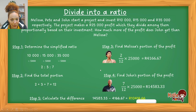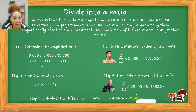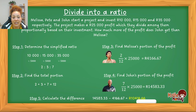Key points for dividing into a ratio: first find the simplified ratio, then find the total portion, then calculate only the portions the question asks for. If the question had asked how much each person gets, you would also calculate Pete's portion: 3/12 × R25 000. But since it wasn't required here, we leave it out.